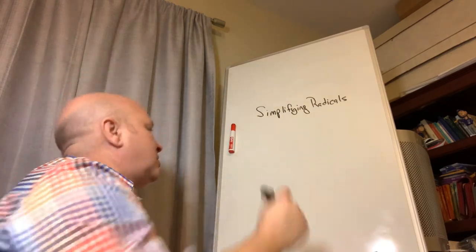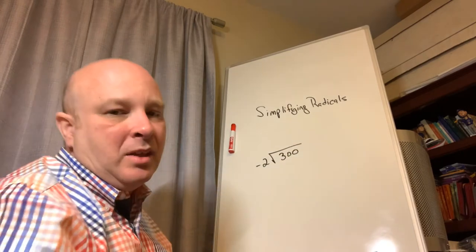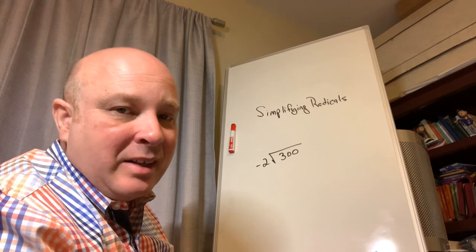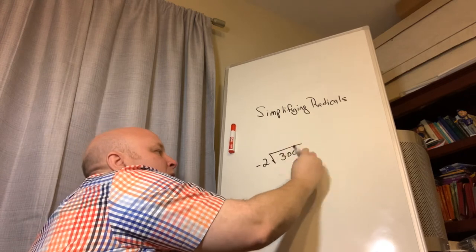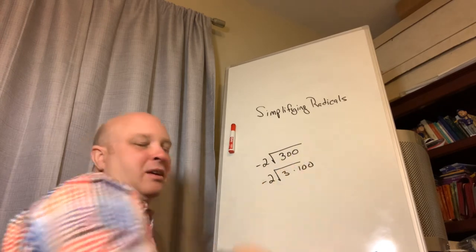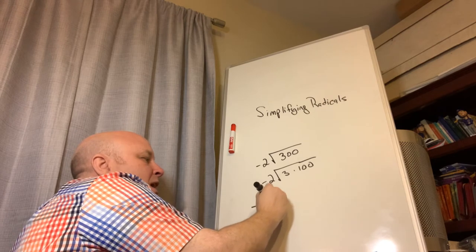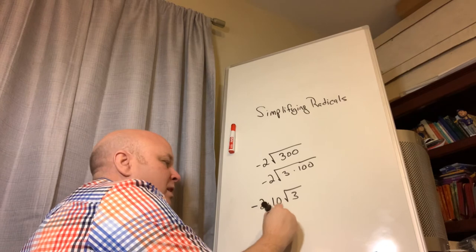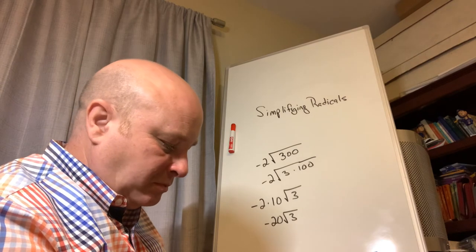What if there's already a number outside the radical? For example, negative 2 times the square root of 300. The number 300 is not a perfect square, but 300 equals 3 times 100, and 100 is a perfect square. So I take out the square root of 100, which is 10, giving me negative 2 times 10 on the square root of 3, which simplifies to negative 20 times the square root of 3.